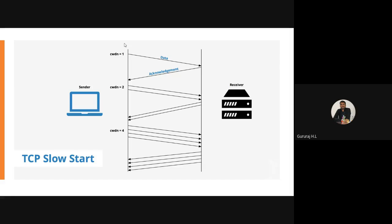This first phase of TCP operation is called the TCP Slow Start operation. For example, if I have 2000 MB of data to transfer, in the first iteration I won't send all the data. Initially I send one, get an acknowledgement, then two, then four, then 16, then double that — 64, and so on. This continues until we get a failure of acknowledgement.